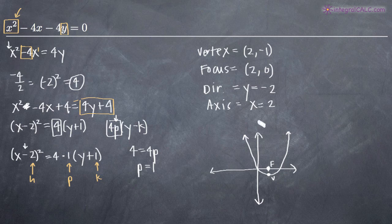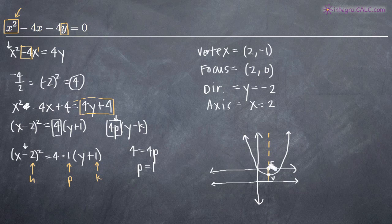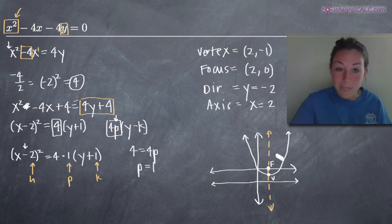The directrix is the line y equals negative 2, drawn below the vertex. The focus is always the same distance from the vertex as the vertex is from the directrix, so those two distances are equal. The axis is the line x equals 2, which is the line over which the parabola is symmetric. That gives a visual for how these four pieces of information compose the parabola.